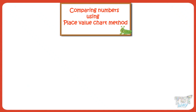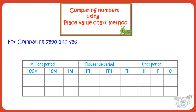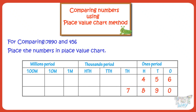We have two numbers: 456 and 7890. We will learn comparing numbers using the place value chart. Here is our place value chart. Now let's put the numbers we have in this place value chart, writing each digit under its place in the place value chart.